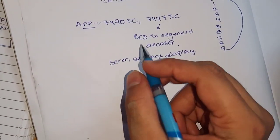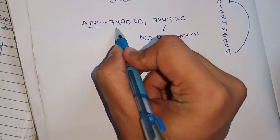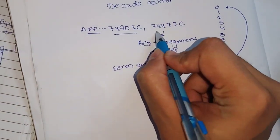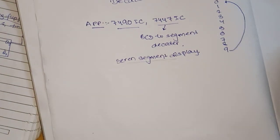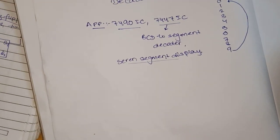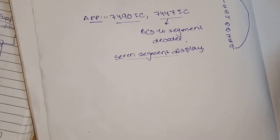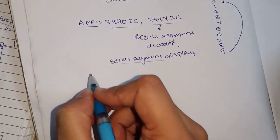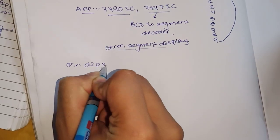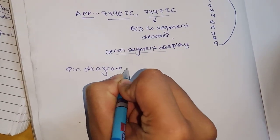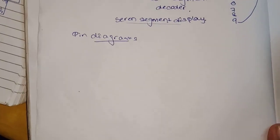In this we don't have a circuit diagram. We have pin diagrams in which we have to draw the diagrams of 7490 IC, 7447 IC, and 7-segment display, and we have to show the connections.